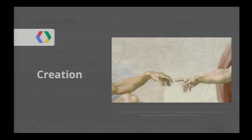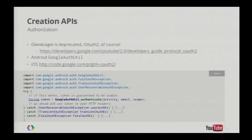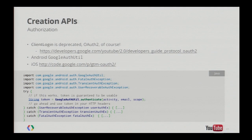What APIs are relevant to content creation on mobile? First, you need authorization so the user can upload video into their account. In the old days, people used client login — this is now deprecated, and we are all using OAuth2. We're making it easier in two ways. On Android, there's a new way of obtaining an auth token: Google authutil. You invoke the GoogleAuthUtil.getAuthToken method, provide the username and the scope for the token. You can get exceptions: UserRecoverableAuthException if the user hasn't authorized yet, a transient exception telling you to retry later, or an auth exception meaning don't bother — you can give up.